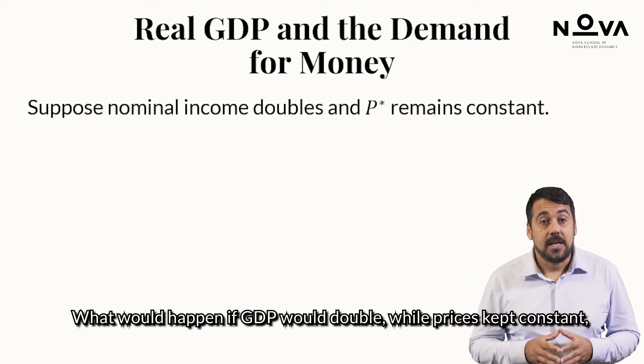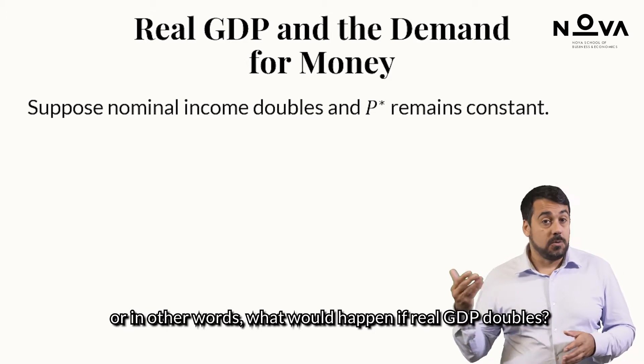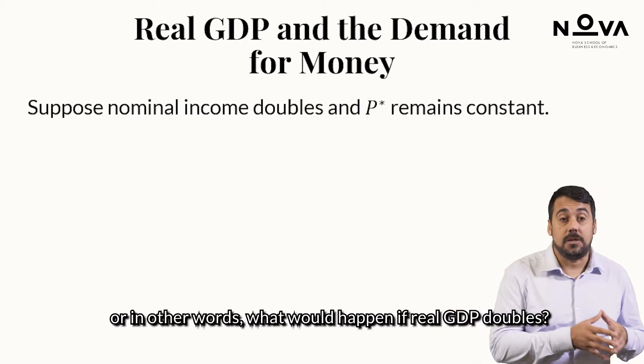Assume the initial plan for money management would be to hold half a month's income, on average, in the form of money. What would happen if GDP would double, while prices kept constant? Or, in other words, what would happen if real GDP doubles?